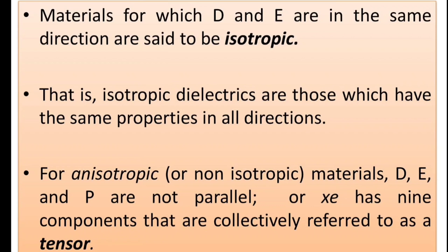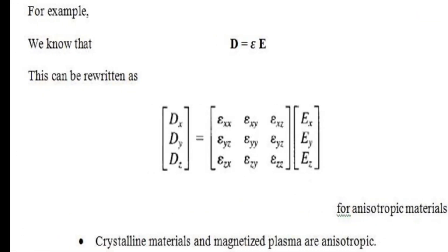For anisotropic or non-isotropic materials, electric flux density D, electric field E, and polarization P are not parallel. The permittivity ε has nine components that are collectively referred to as a tensor.